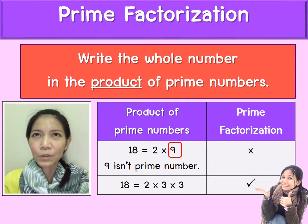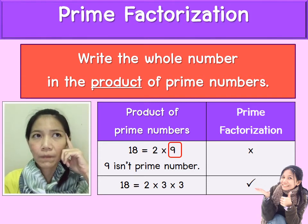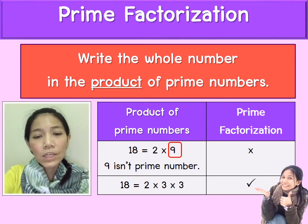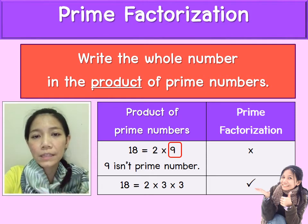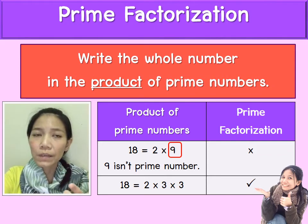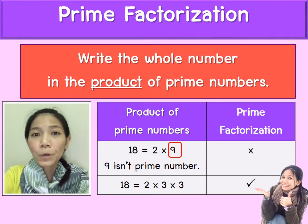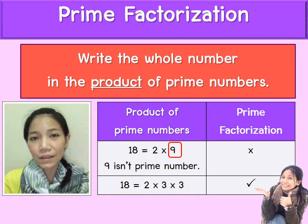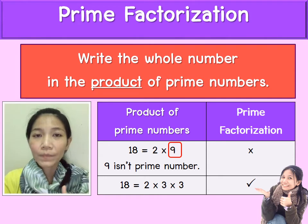So you think again: 18 equals 2 times 3 times 3. 2 is a prime number, 3 is a prime number — yes, correct! You can write 18 in factorization as 2 times 3 times 3. That's correct.